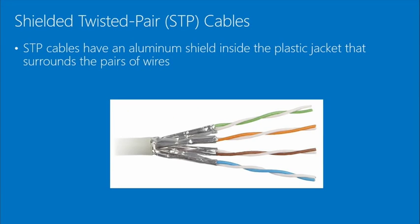Beyond unshielded twisted pair, there is shielded twisted pair — STP — where each cable is individually wrapped for additional protection. This requires more specialized tools because you have to strip the overall cable sheath, then the shielded components, then reach the wire itself. It's more expensive and more difficult to handle, and not terribly common in most environments.